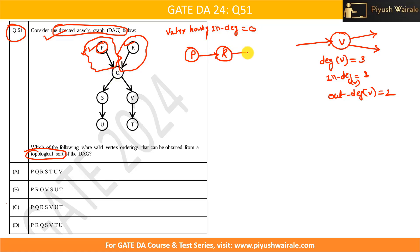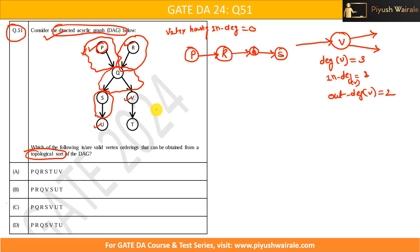So after R, I can go for Q. Now I have removed Q also, removing all edges coming out of Q. Now I have two vertices having in-degree zero: S and V. I can go for any of them. For example, I will go for S. So after Q, I will go for S. Again, I have two vertices having in-degree zero — after going for S, I can go for U. After removing U, I have two remaining: V and T. After U, I can only go for V, and then the last node is T. So one topological sorting is: P, R, Q, S, U, V, T. Multiple are possible.